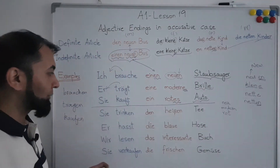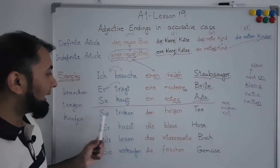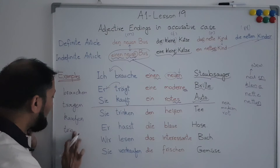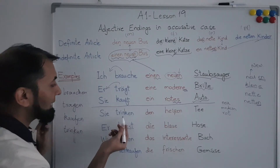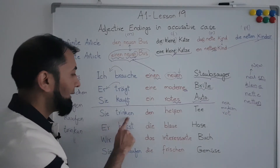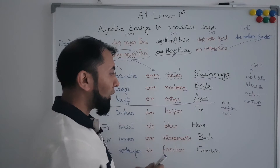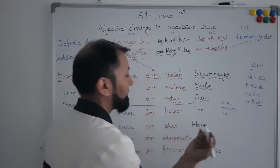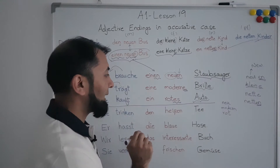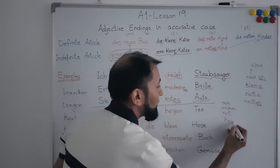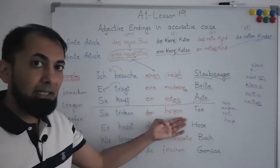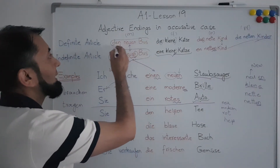Now we move to examples with definite articles. The example is 'Sie trinken den heißen Tee' — they drink the hot tea. 'Trinken' is a German verb meaning 'to drink'; with 'sie' it remains 'trinken'. 'Tee', meaning 'tea', is a masculine noun, so it has the definite article 'der', which becomes 'den' in the accusative. 'Heiß', meaning 'hot', gets '-en' at the end, following the masculine definite article rule.